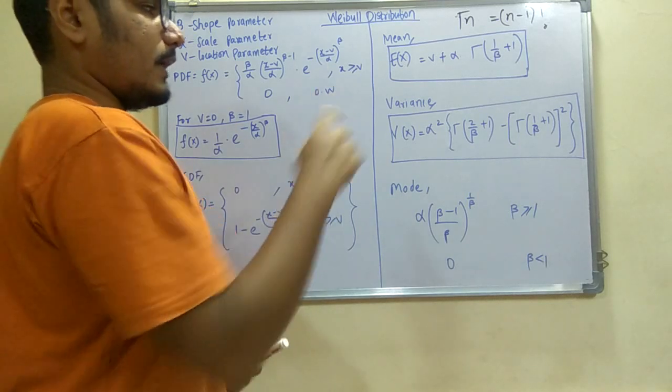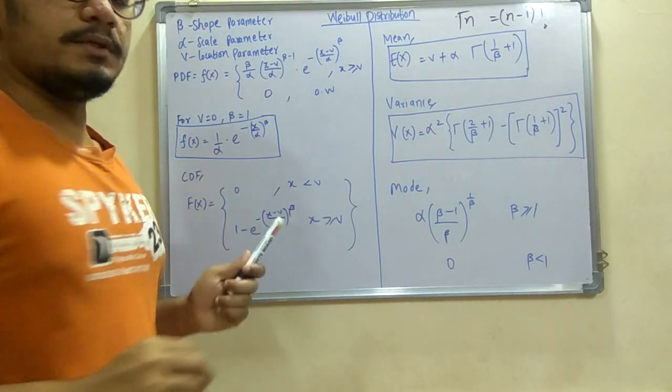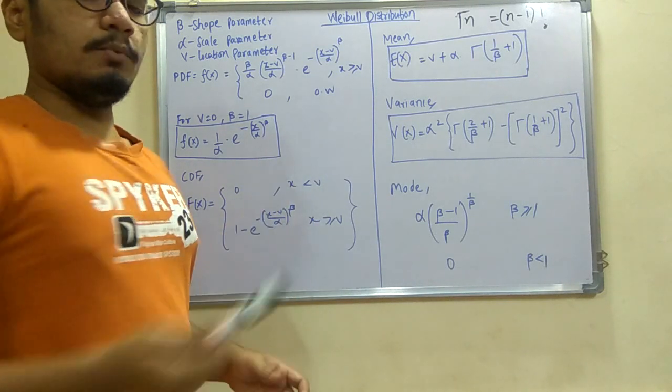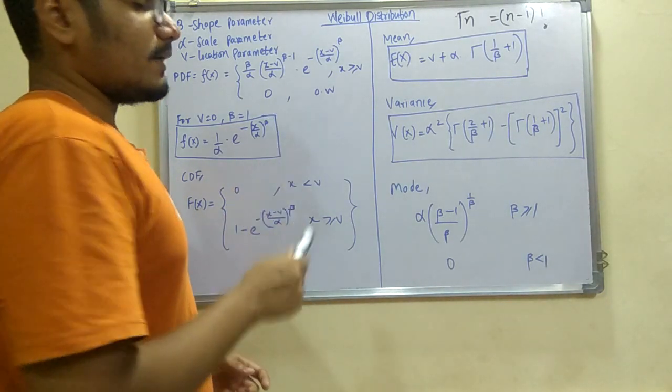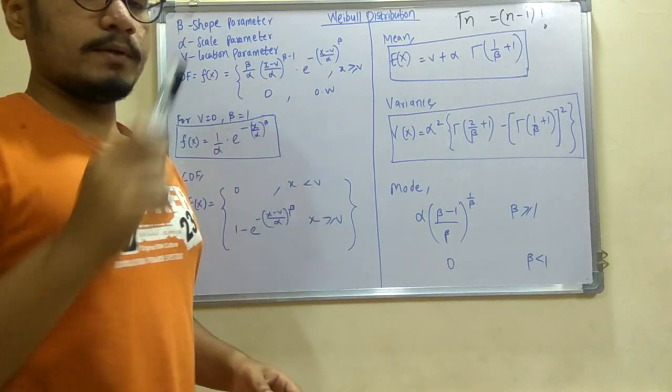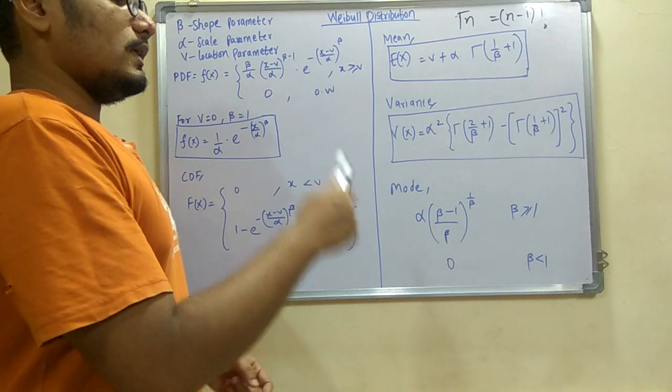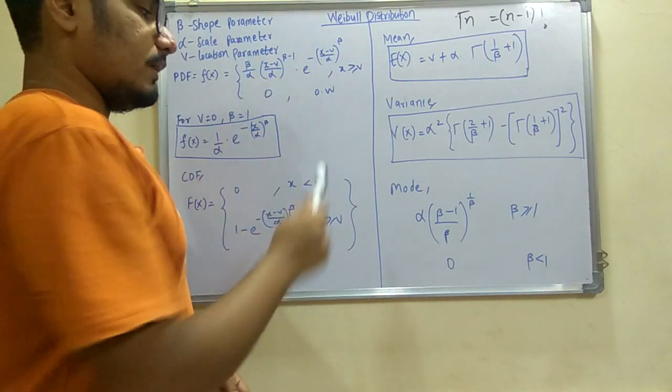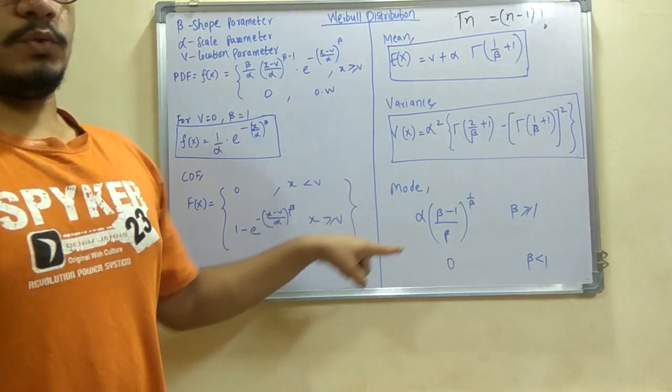Next the mode for this: that is alpha multiplied by ((beta minus 1) divided by beta) whole raised to (1 by beta). And the value of beta, if it lies greater than or equal to 1, then this is the case. Or if otherwise, that is if beta is less than 1, it will be 0.